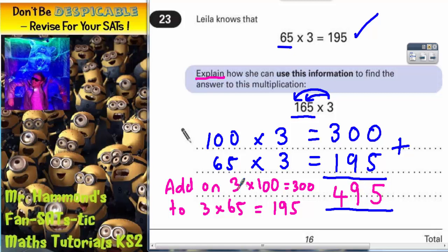So we're adding on 3 lots of 100 to 3 lots of 65 to make 3 lots of 165. And there's your answer.